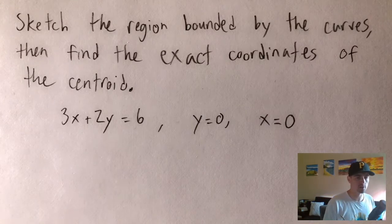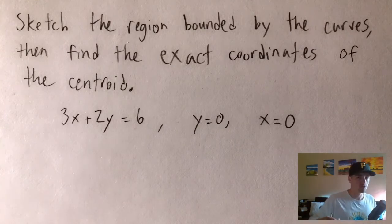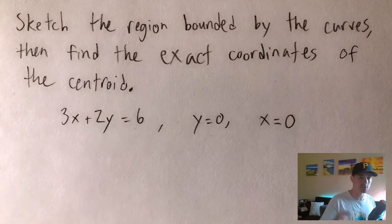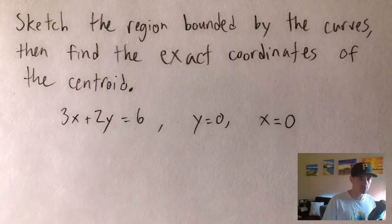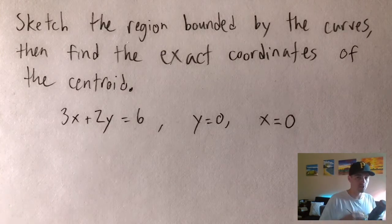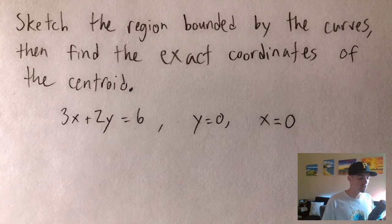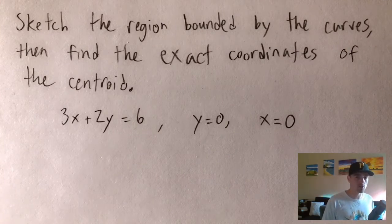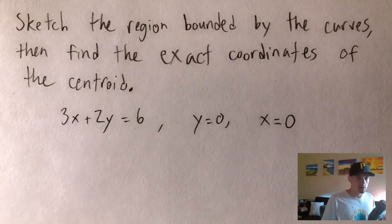Before we jump into that I do just want to mention the difference between centroid versus center of mass. Really in most contexts they're going to be the exact same point. A center of mass is usually used to describe some physical object that actually has a mass — typically a thin plate described by some functions or boundaries. A centroid is usually in the context of finding the center of some region as described on an xy plane. But if that object has uniform density, the center of mass and the centroid are going to be the exact same point, so you can use those two terms interchangeably.